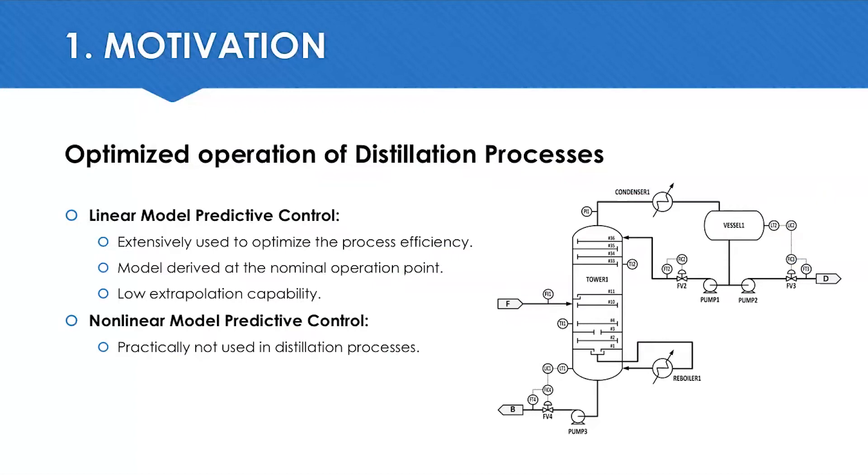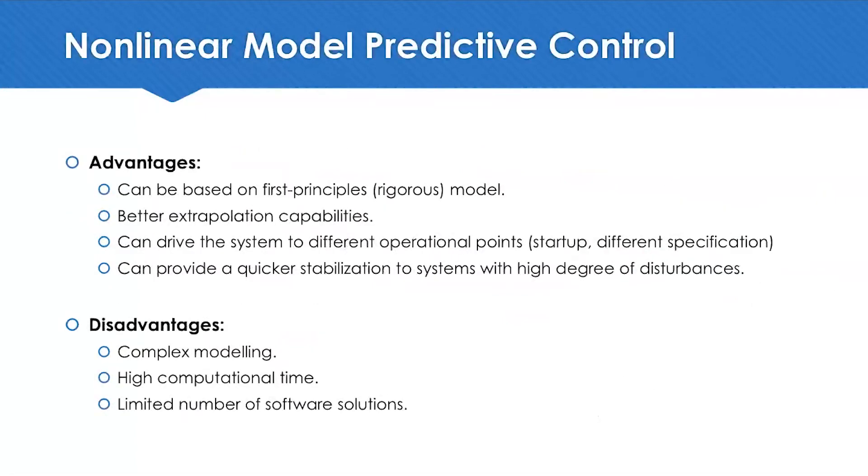On the other hand, the nonlinear MPC is practically not used on distillation columns. Some of its advantages are it can be built using first principles equations, so it could have better extrapolation capability. With that, it can drive the system to different operation points, like a planned start-up or changing the product specification. Also, it can provide quicker stabilization when high disturbances are present.